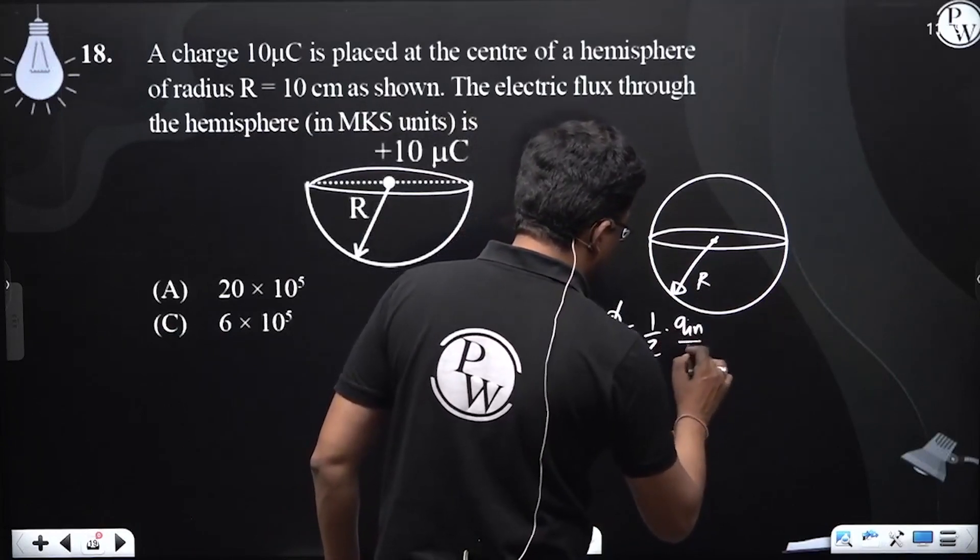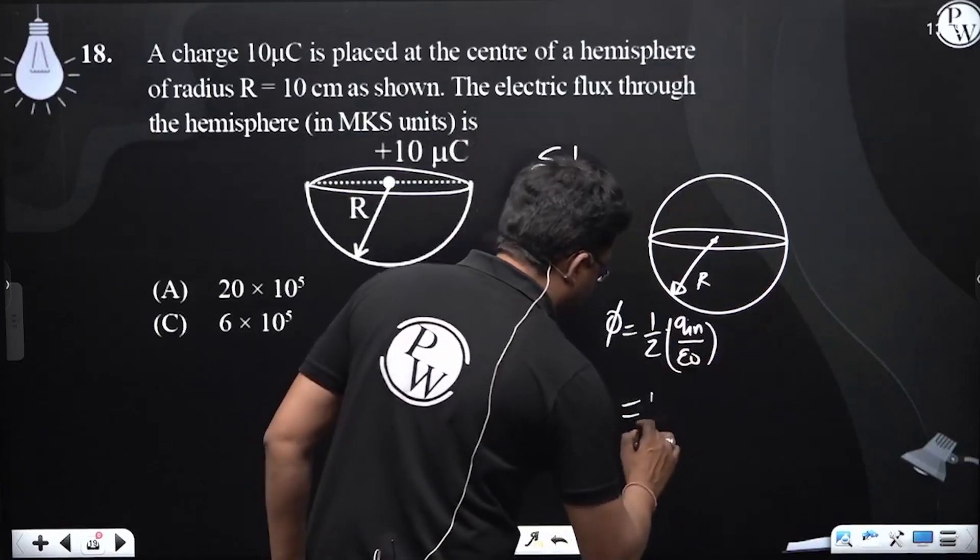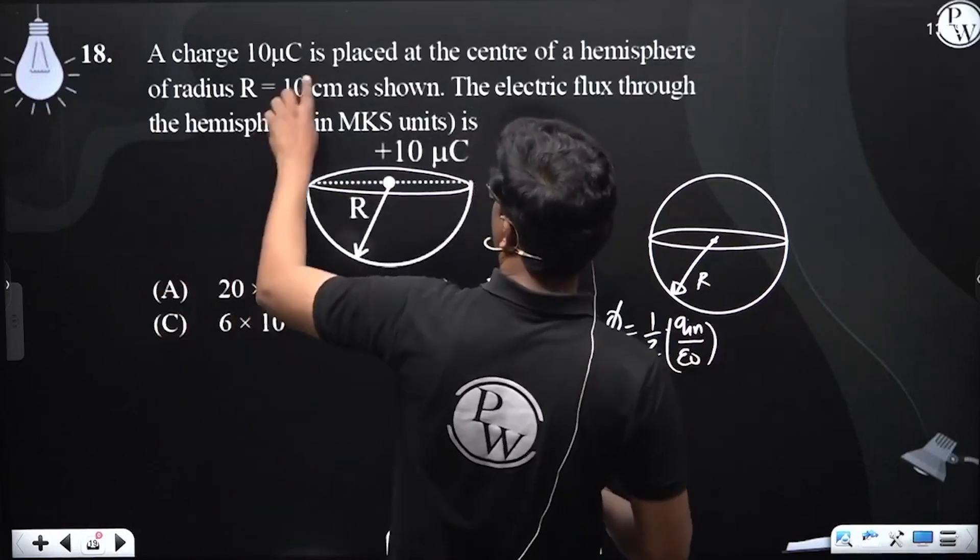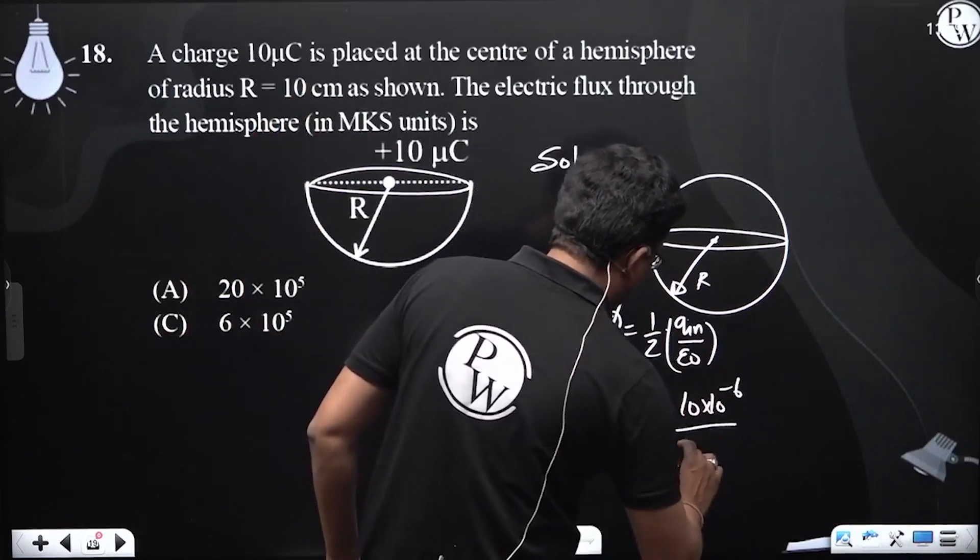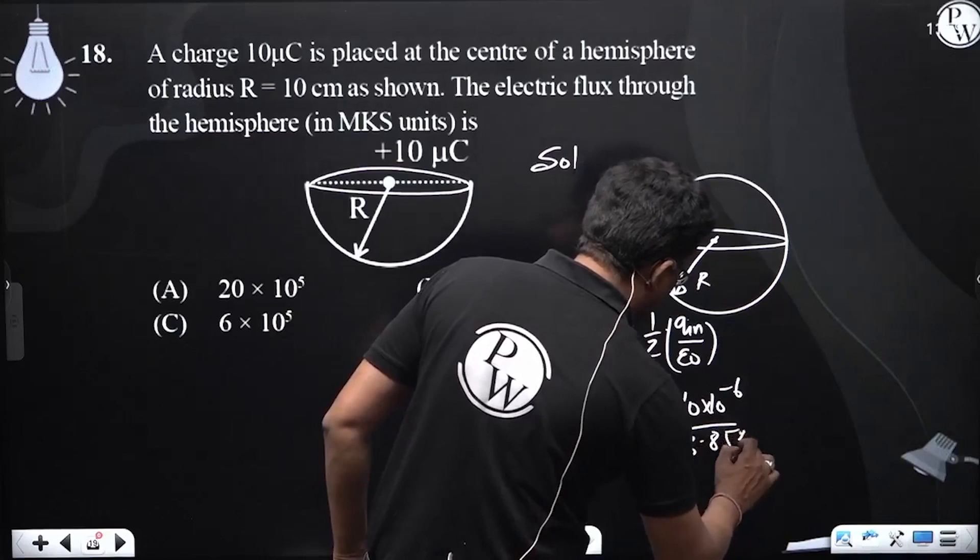So 1 by 2, Q is how much we have? 10 into 10 to the power minus 6 upon 8.85 into 10 to the power minus 12.